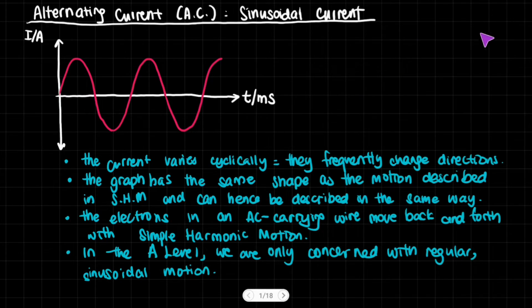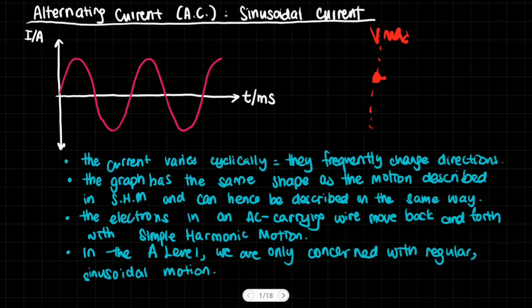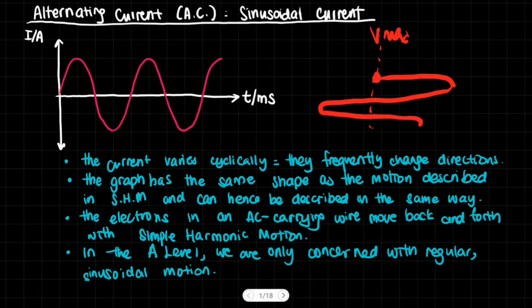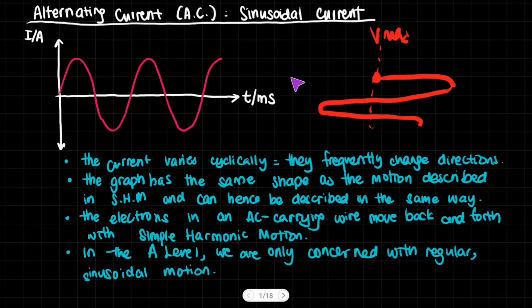That is what simple harmonic motion is. An object in SHM has an equilibrium position at which velocity is maximum. It moves quickly, decelerates, slows to a momentary stop, changes direction, accelerates again, slows down, and repeats. The definition is that the acceleration is directly proportional to the displacement from the equilibrium position, acting in the opposite direction. The electrons don't make net progress — they just go back and forth inside the wire.